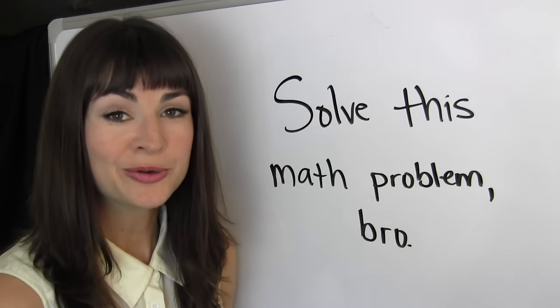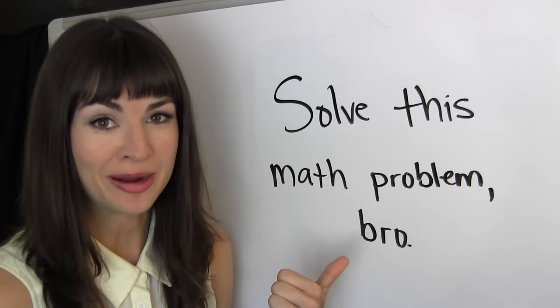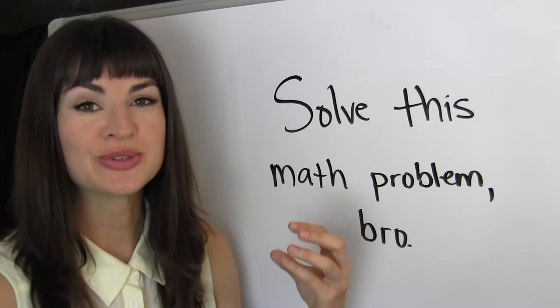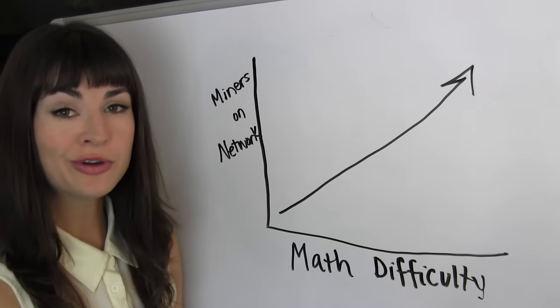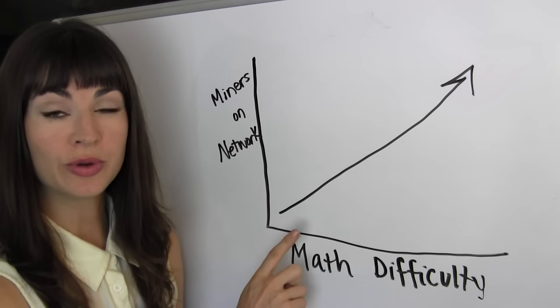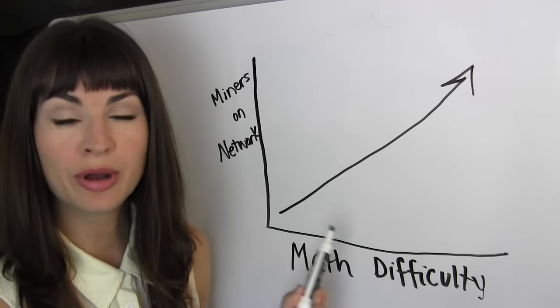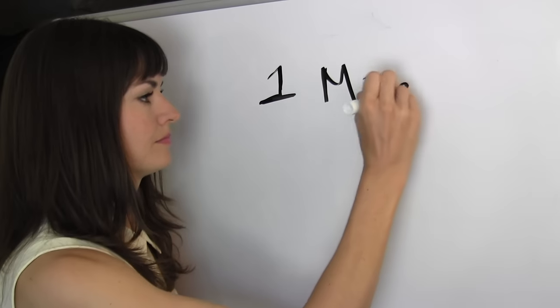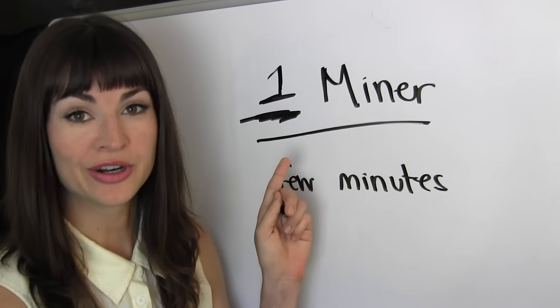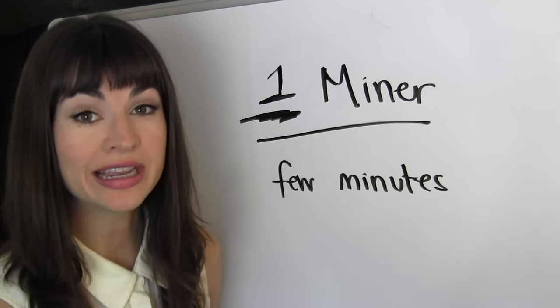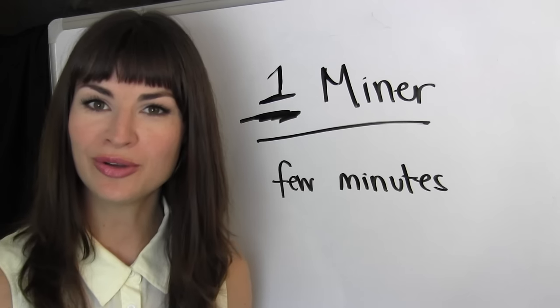The computer code, computer code looking something like this, that makes our blockchain possible contains a math problem to be solved. Seems kind of silly when I say it out loud, but I'm not kidding. The computer code has a self-adjusting math problem that these mining machines are built to solve. And the difficulty of the math problem is set to increase as the number of miners on our blockchain network increases. And all this fancy mumbo-jumbo is done to ensure one thing. That only one miner solves the math problem at a time, and that it happens consistently every few minutes.